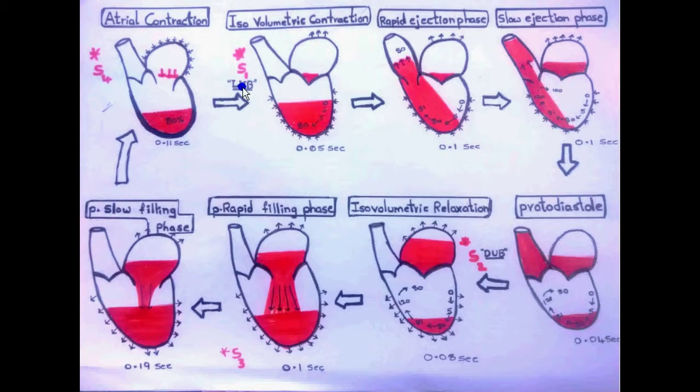The second heart sound is heard during protodiastole or isovolumetric relaxation. As we know, protodiastole is a very minute phase, so it can also be considered that S2 is heard in isovolumetric relaxation. Here we hear the sound 'dub'.